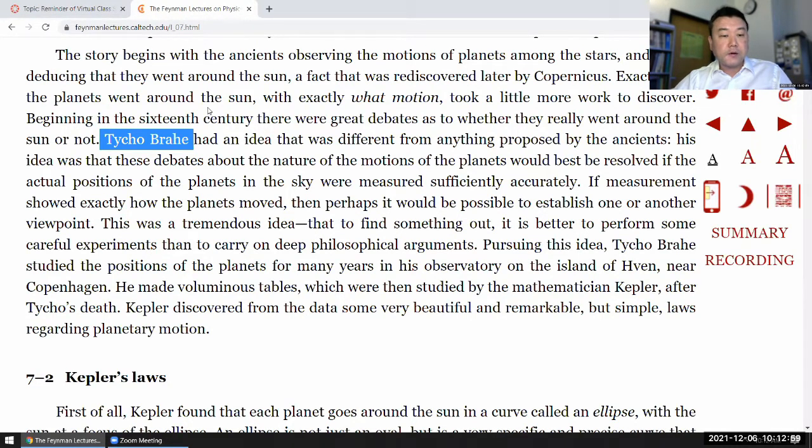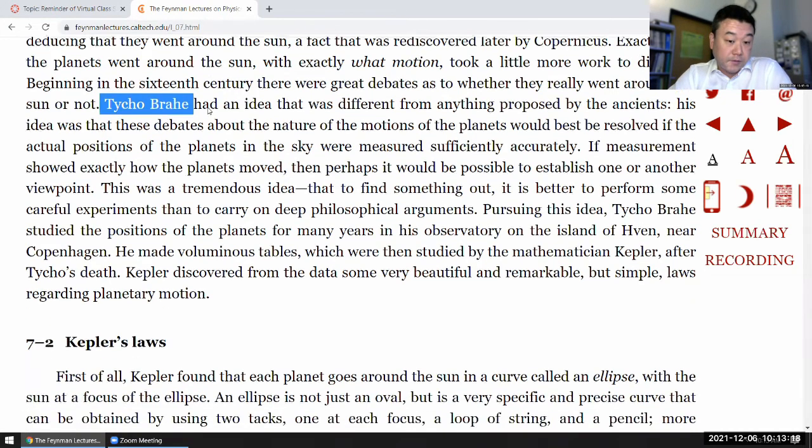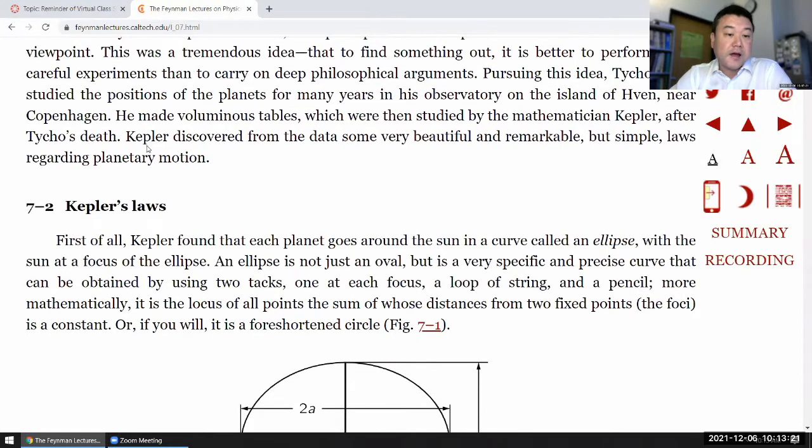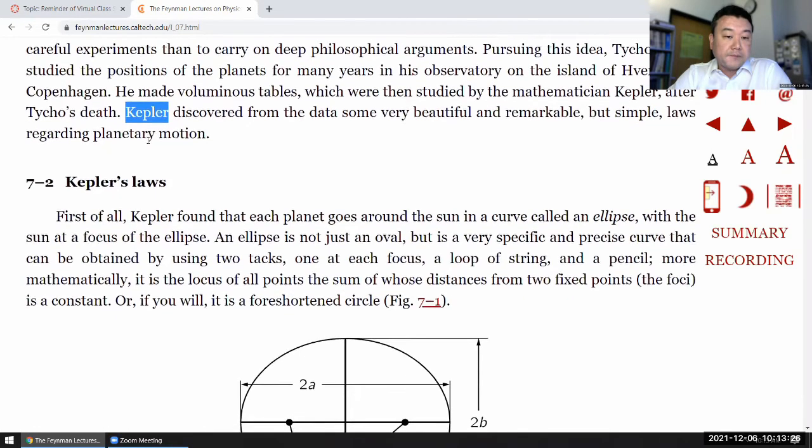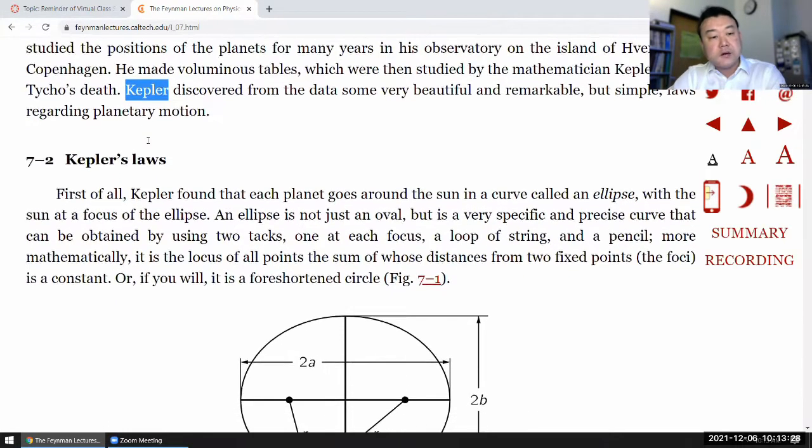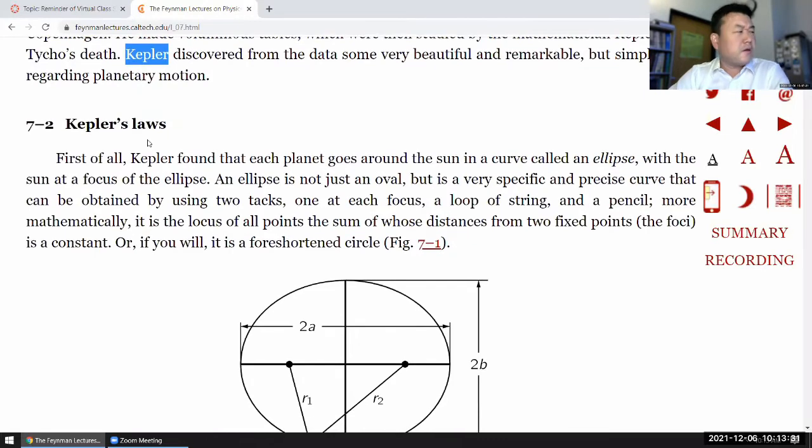He observed planets for over a couple decades, 20, 25, 30 years. And after realizing that what was really lacking was quality of existing observations. So he gathered the data for that long, looking at the stars in the night sky. And what he was interested in was not the stars, but the planets. Well, maybe stars, but what turned out to be important was his measurement of position of planet. And Kepler is the guy who analyzed Tycho's data.